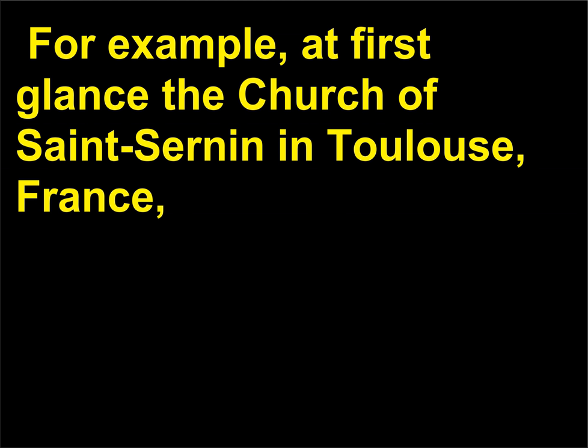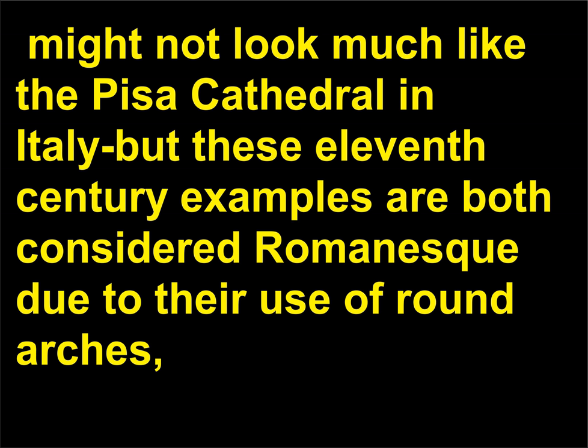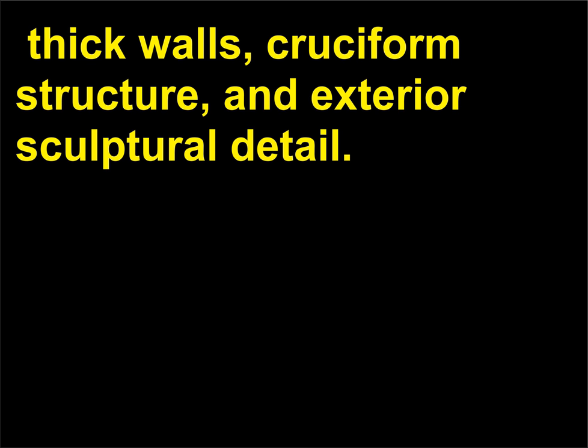For example, at first glance the Church of Saint-Sernin in Toulouse, France, might not look much like the Pisa Cathedral in Italy, but these 11th century examples are both considered Romanesque due to their use of round arches, thick walls, cruciform structure, and exterior sculptural detail.